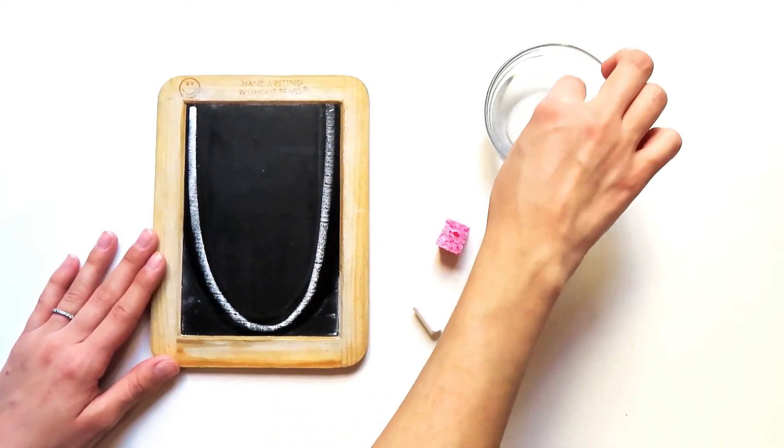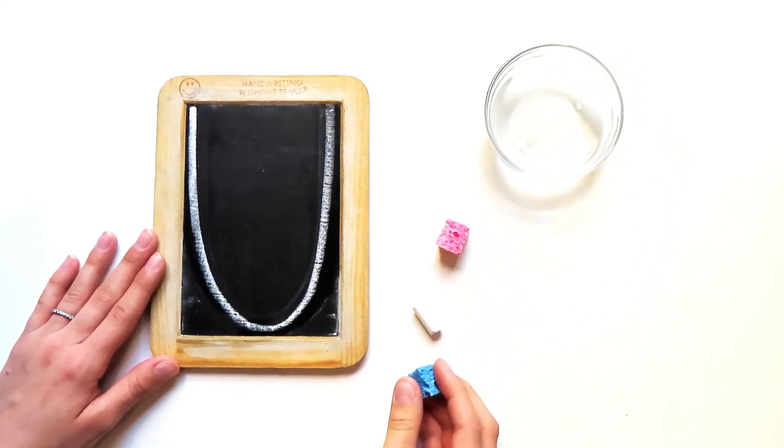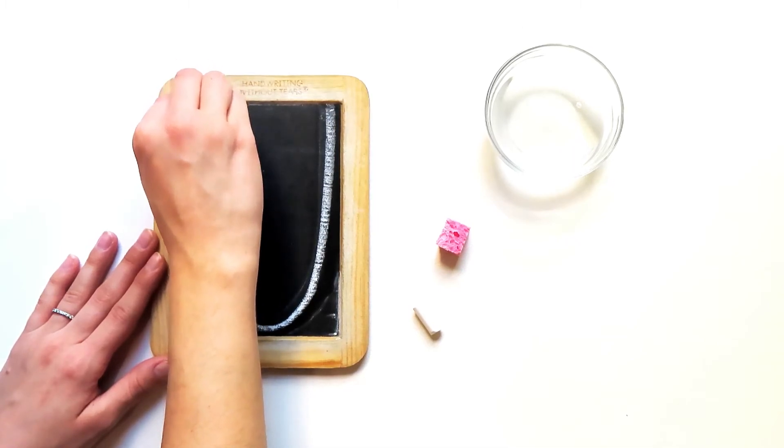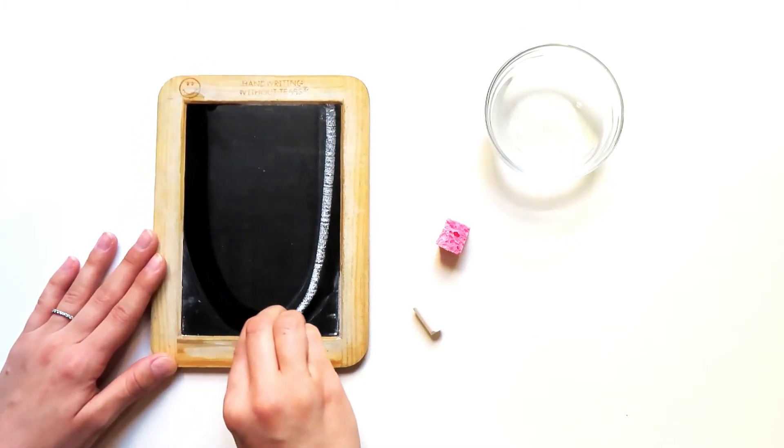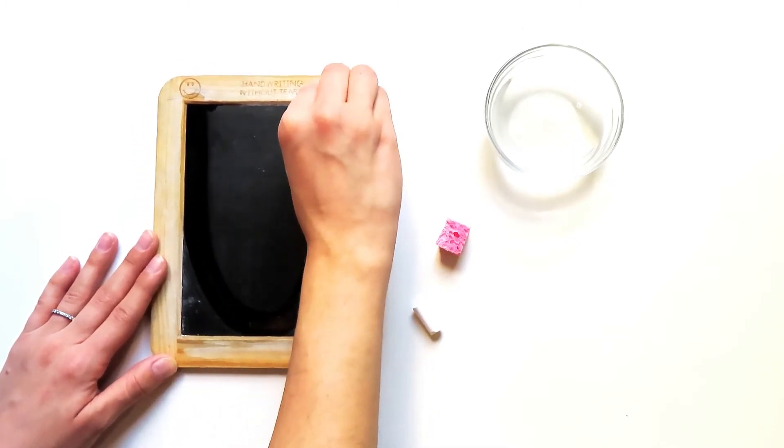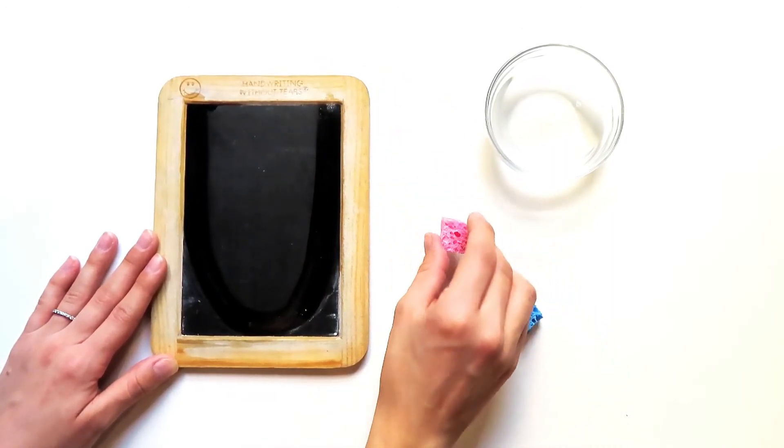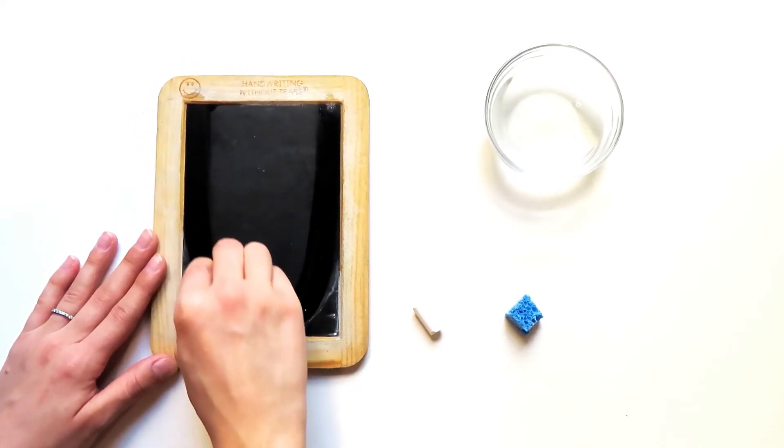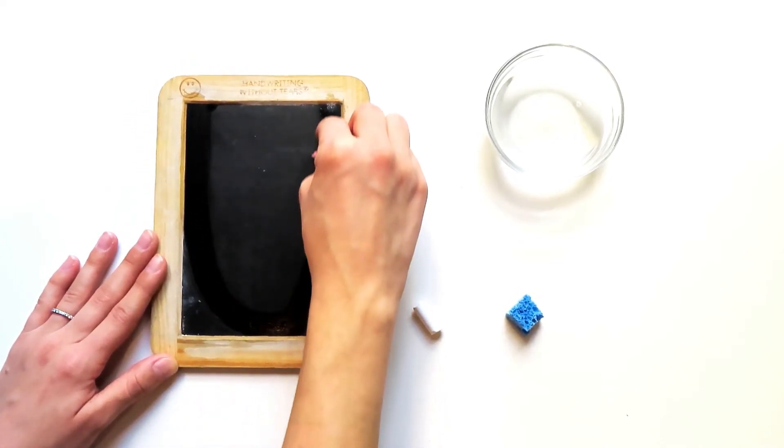Dip your wet sponge in the water and give it a big squeeze. Okay, here we go. Down, scoop, up. Down, scoop, up. Time for our dry sponge. Down, scoop, up.